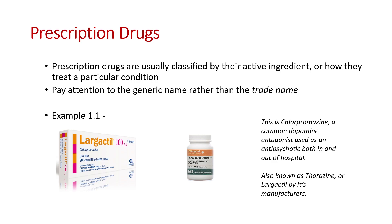Before we start, this is something you're already familiar with as technicians: the distinction between over-the-counter and prescription drugs. Prescription drugs are usually classified by their active ingredient or how they treat a particular condition, but we want you to start paying attention to generic names rather than trade names. At this level of practice, especially when using paramedic drugs, we need to think about what the active ingredient of a drug is. For example, chlorpromazine is labelled Largactyl in some areas, or Thorazine in others — these are the same drug with different trade names made by different companies. Similarly, Narcan is a trade name, while Naloxone is the generic name.